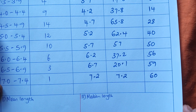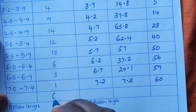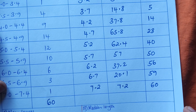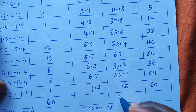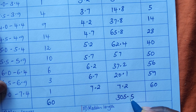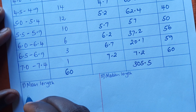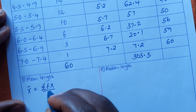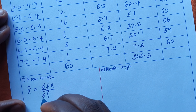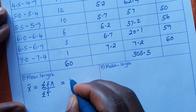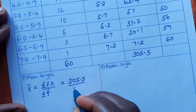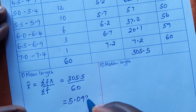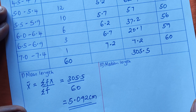The total frequency is 60, and the total of f of x is 305.5. To work out the mean, we divide the summation of f of x by the summation of frequency: 305.5 divided by 60, which gives us 5.092 centimeters.